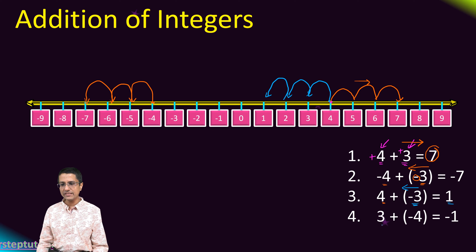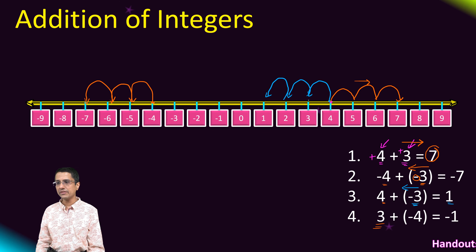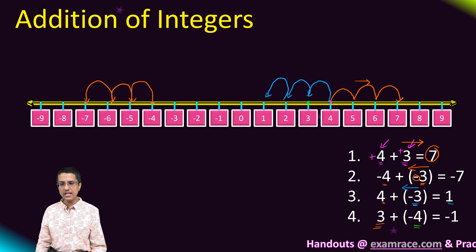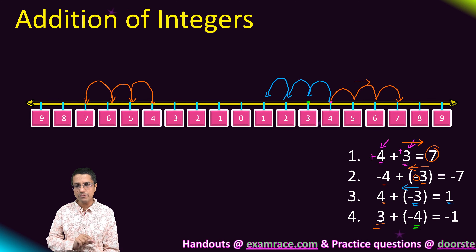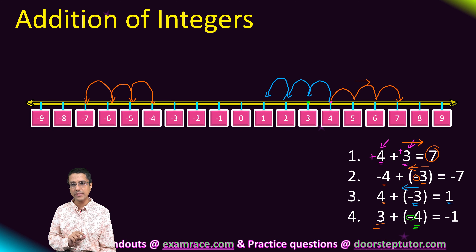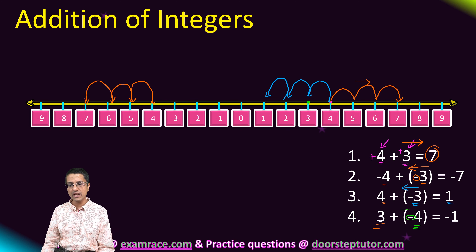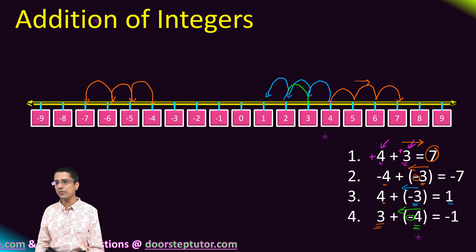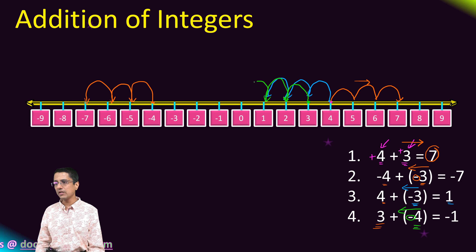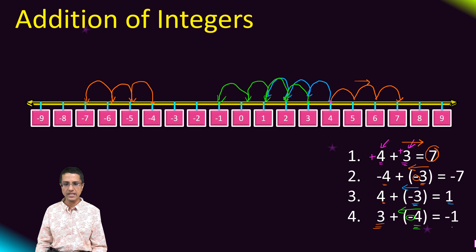Case four: we start at three. We need to move four places. Since our four is negative, we go towards the left. We go four places to the left and end up at minus one.